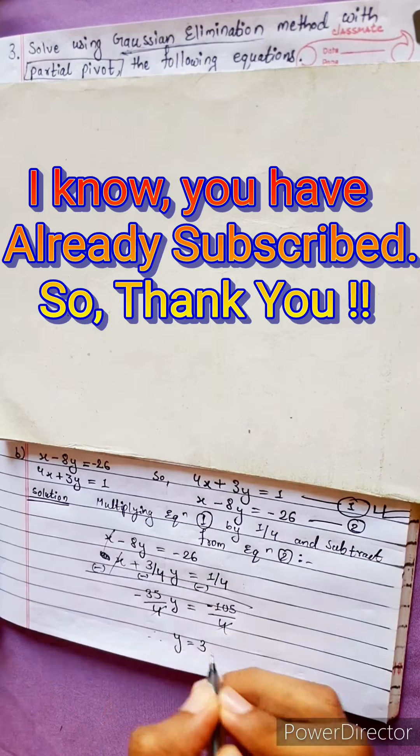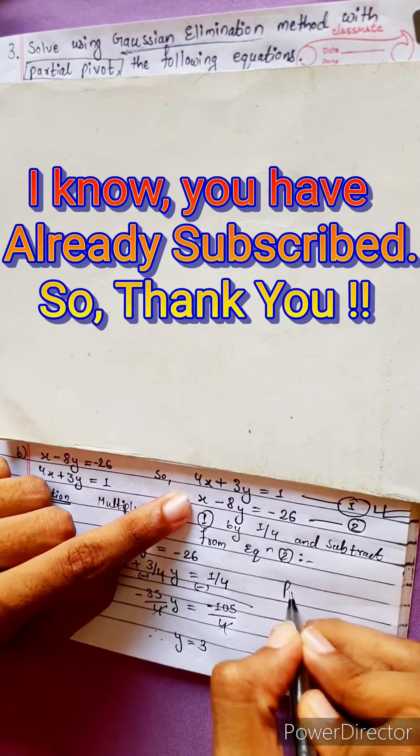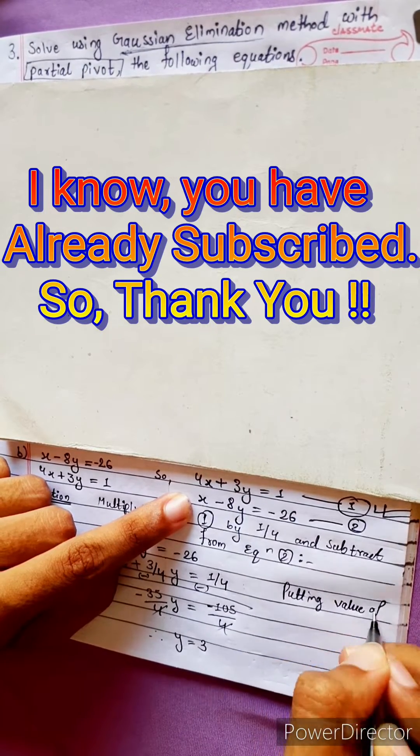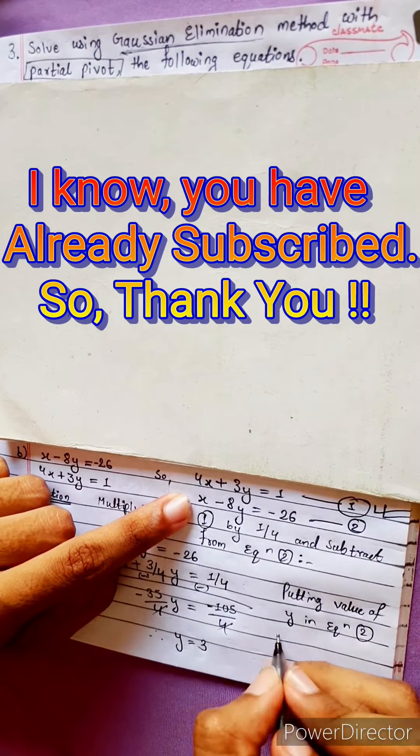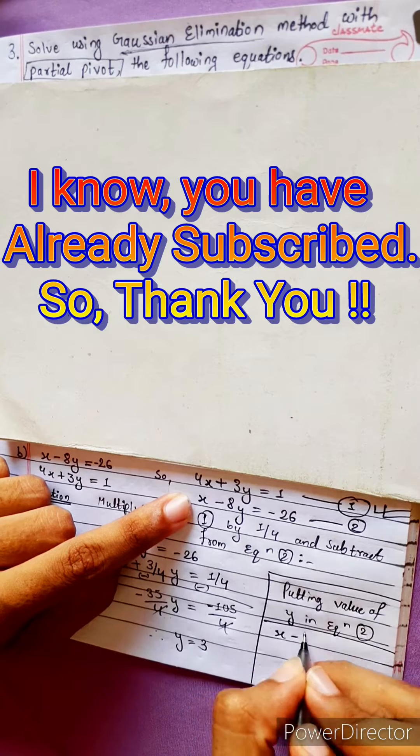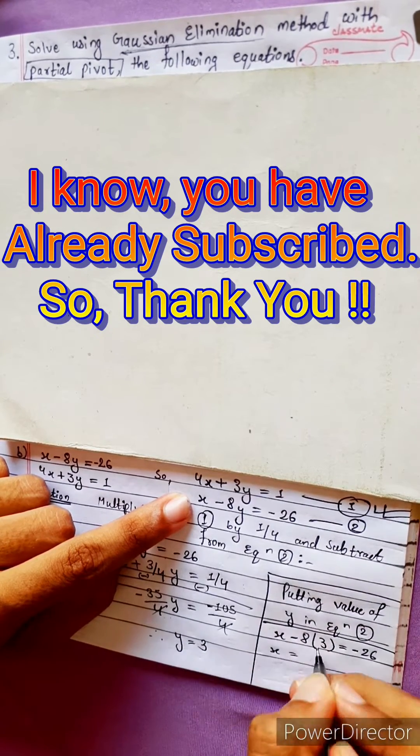Therefore, y equals to 3. Now, putting value of y in equation 2, we get x minus 8 into 3 equals to minus 26. Eight times 3 is 24.